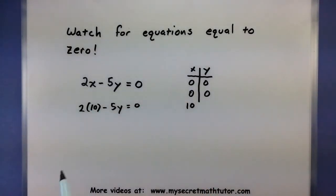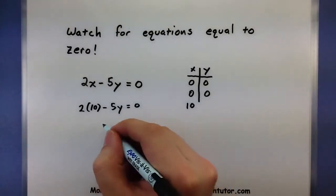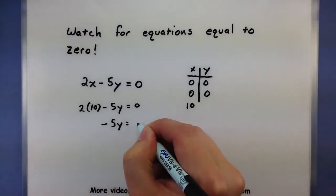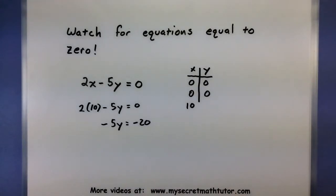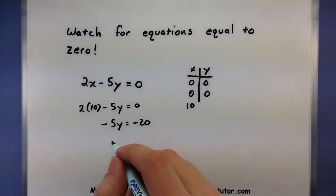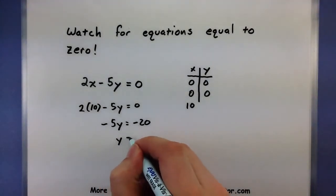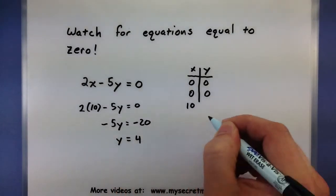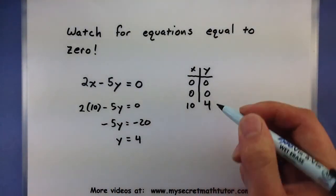I can see that this will be 20, and then I can subtract that from both sides. So I have negative 5y is equal to negative 20, therefore y must equal a positive 4. There we go.